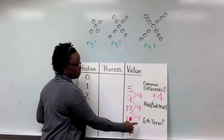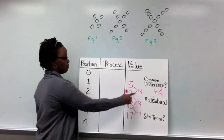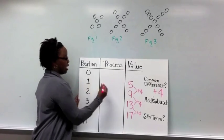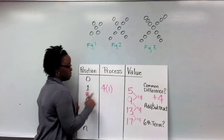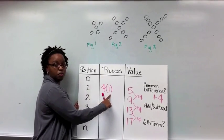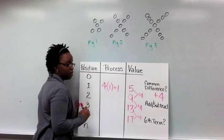Remember, because that common difference is plus 4 each time, repeated addition is just a multiplication problem. So I'm going to do 4 times my position number. So I've got 4 times the position of 1. Well, that's only 4. And so to get to 5, I still need to add 1 more.